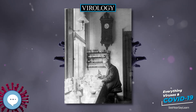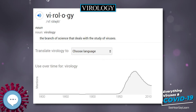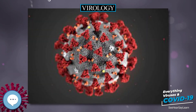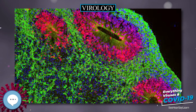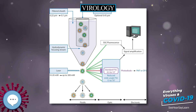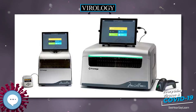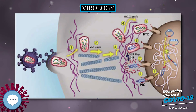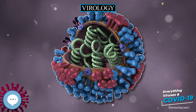In 1963, the hepatitis B virus was discovered by Baruch Blumberg, who went on to develop a hepatitis B vaccine. In 1965, Howard Temin described the first retrovirus, a virus whose RNA genome was reverse transcribed into complementary DNA (cDNA), then integrated into the host's genome and expressed from that template. The viral enzyme reverse transcriptase, which along with integrase is a distinguishing trait of retroviruses, was first described in 1970, independently by Howard Temin and David Baltimore.